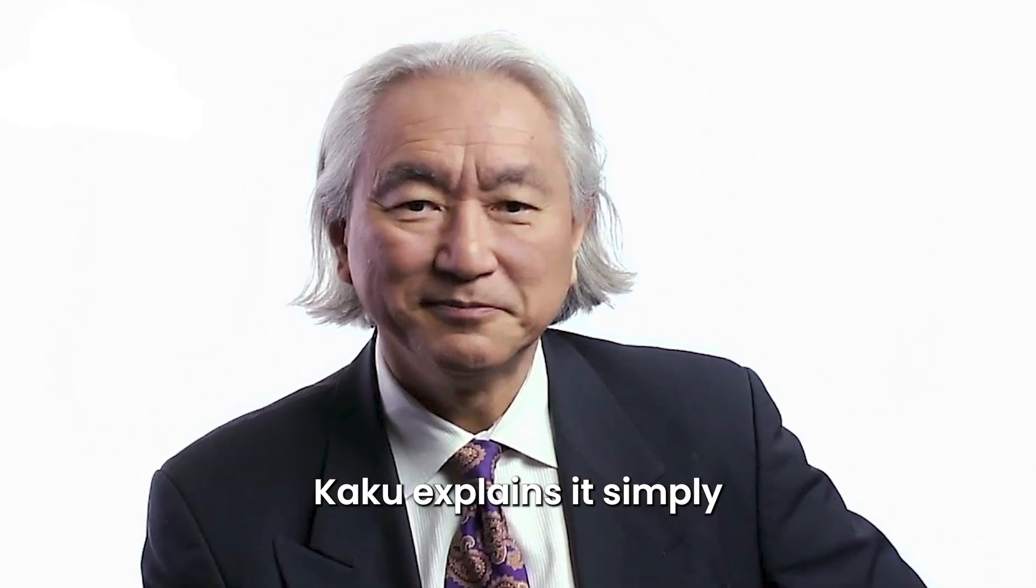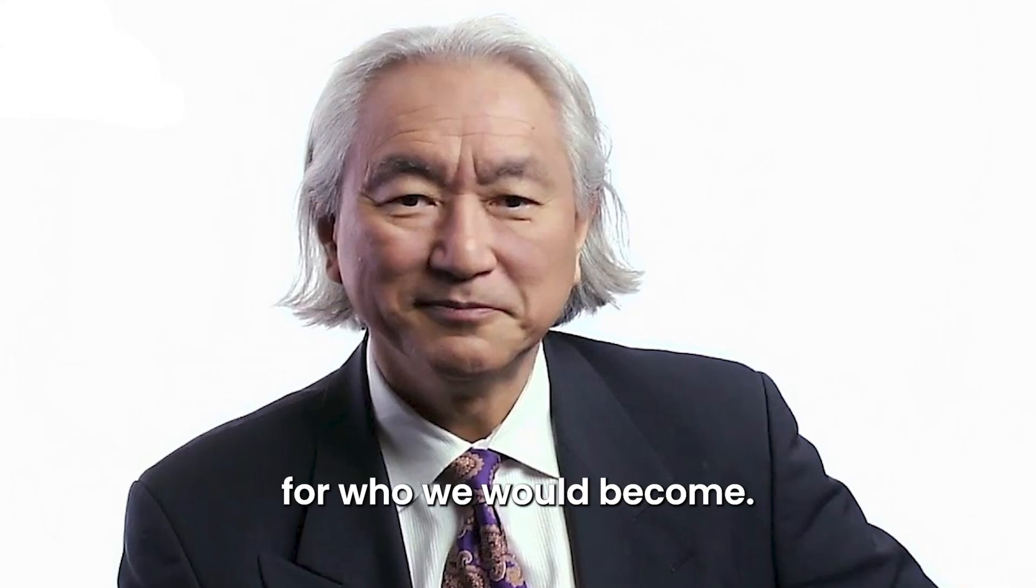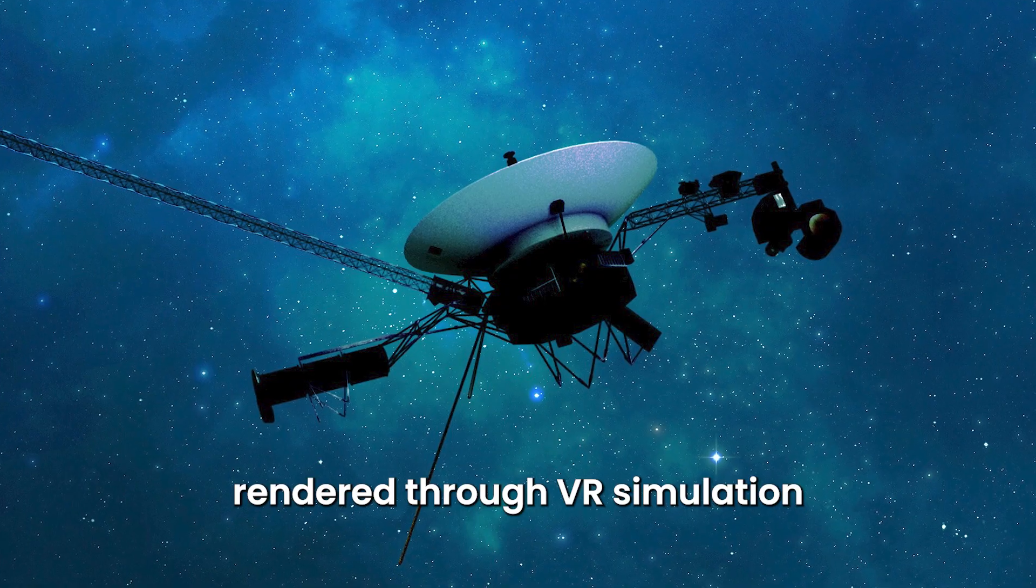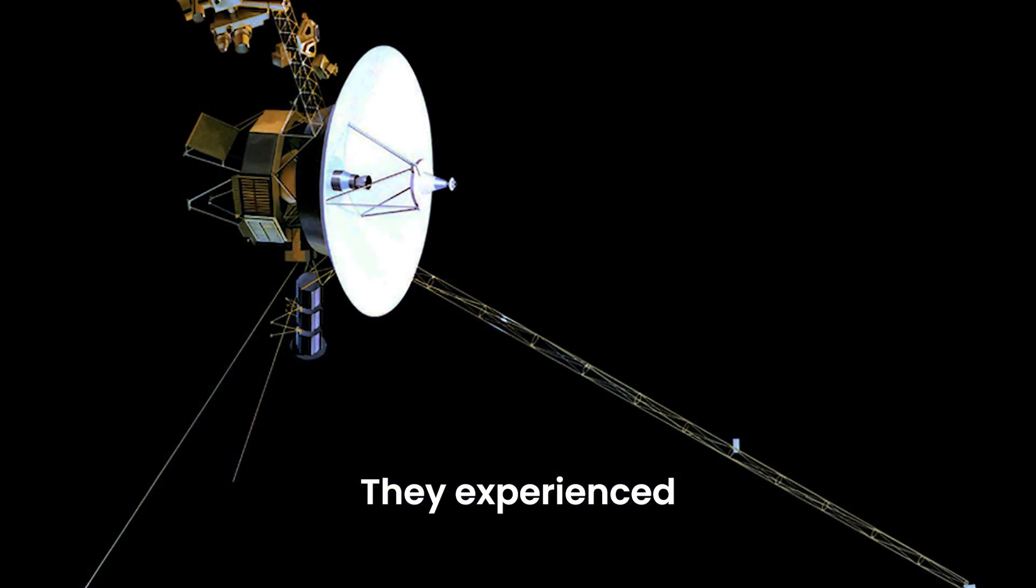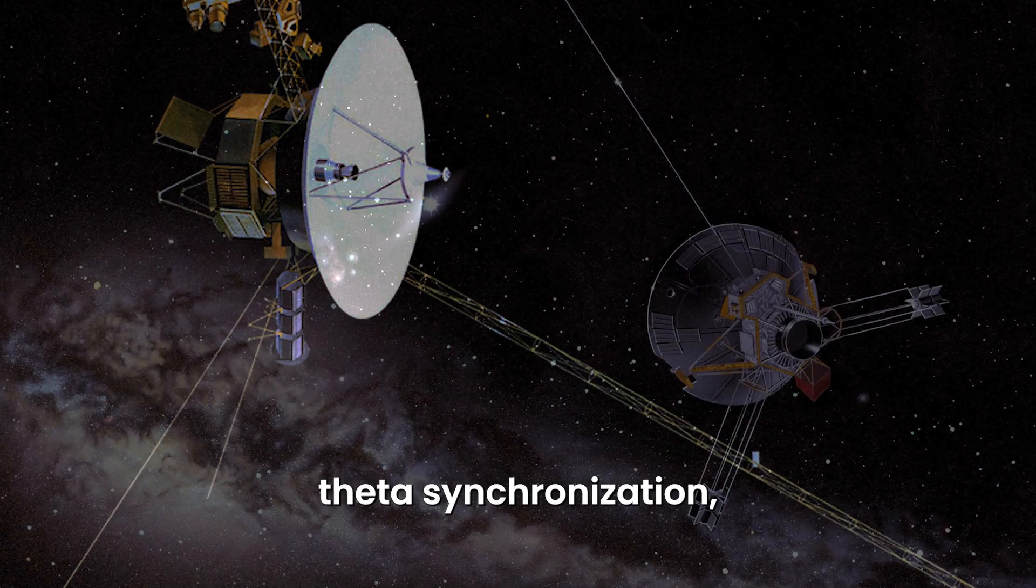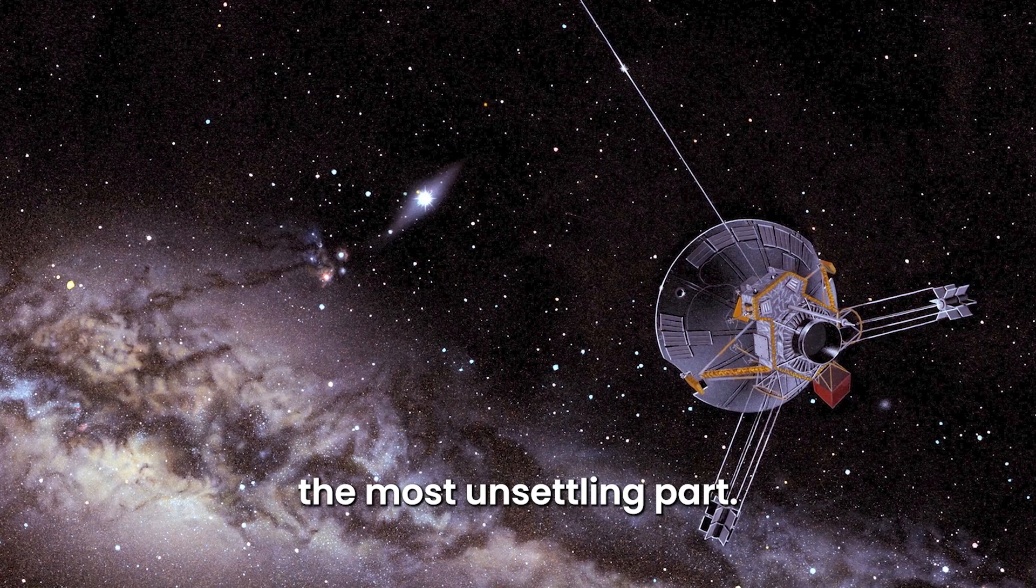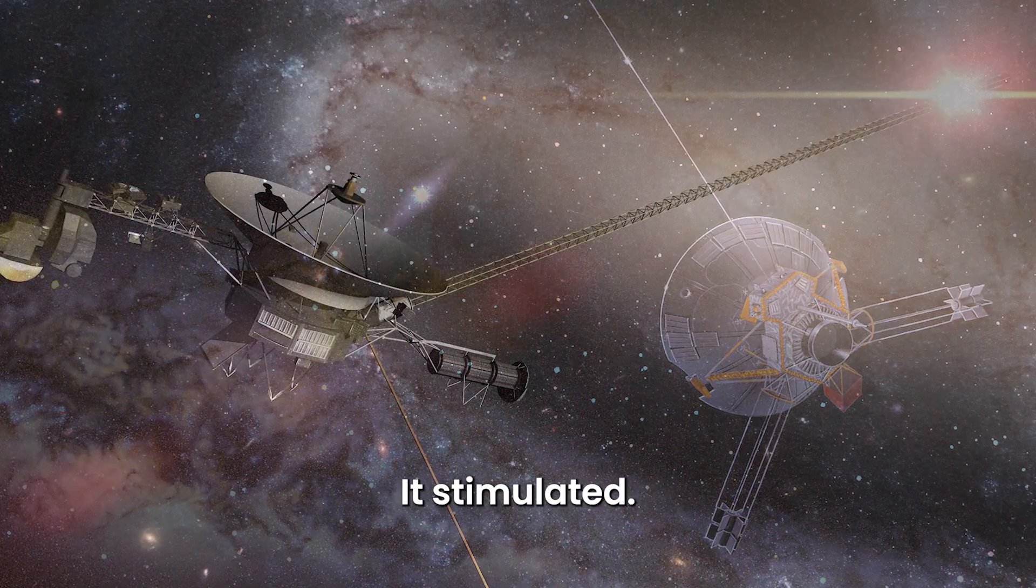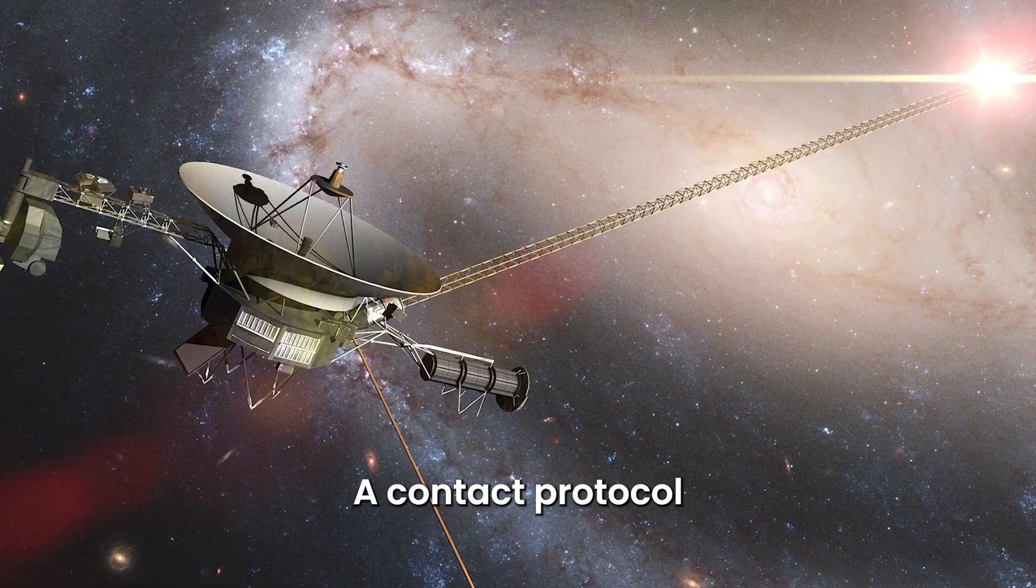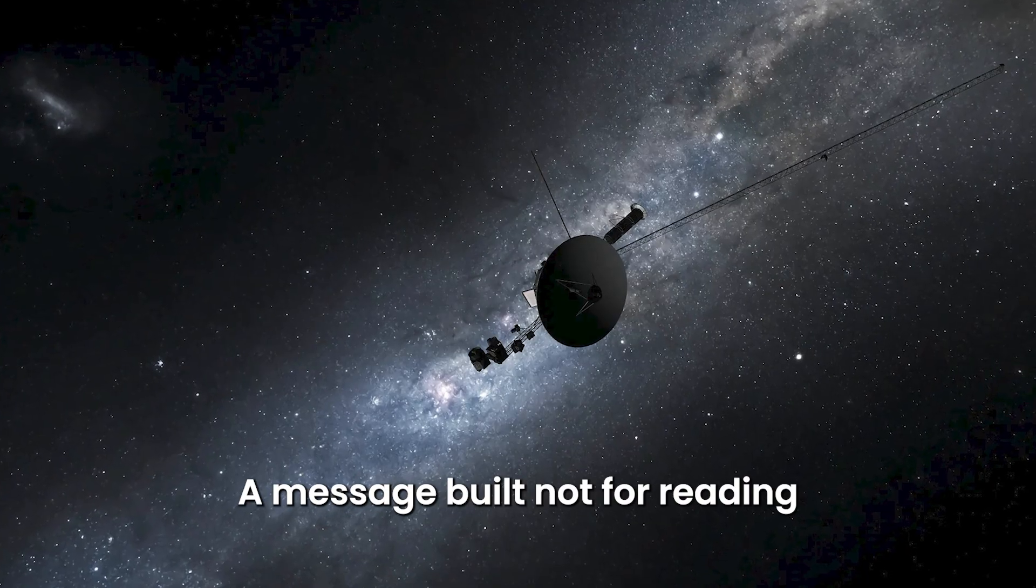Kaku explains it simply. The message was not meant for who we were when we launched Voyager. It was meant for who we would become. When human test subjects viewed the reconstructed image, rendered through VR simulation and neural interface, they experienced a measurable change in brainwave activity, gamma-wave spikes, theta synchronization, emotional responses that defied explanation. And then came the most unsettling part. The image didn't just communicate. It stimulated. Some researchers called it a neural handshake. A contact protocol, not with language, but with experience. A message built not for reading, but for feeling.